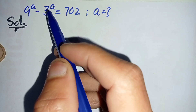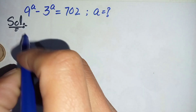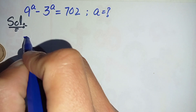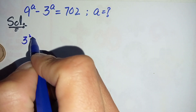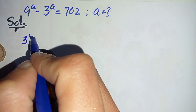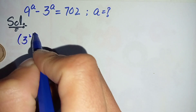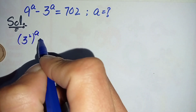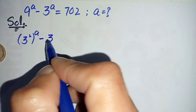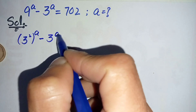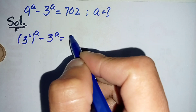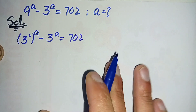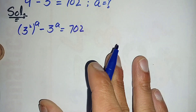We write 9 as 3 raised to power 2, or 3 squared. So this equation will become: 3 raised to power 2, whole raised to power a, minus 3 raised to power a, is equal to 702.